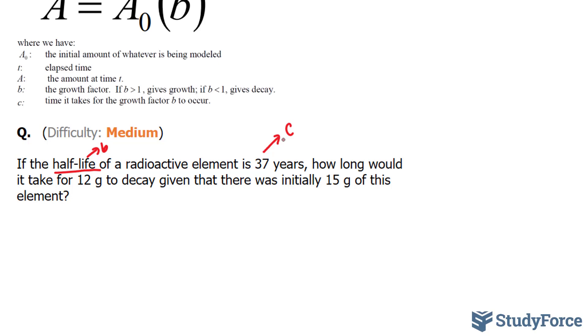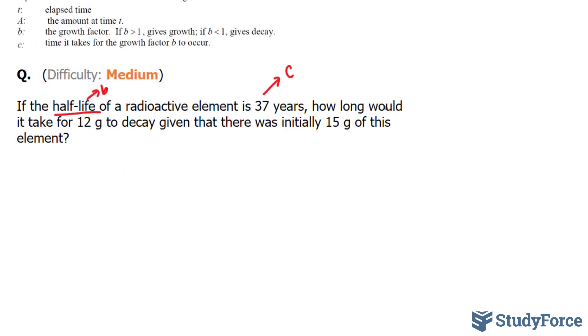So it takes 37 years for half of that matter to disappear. How long would it take for 12 grams to decay, given that there was initially 15 grams of this element? So initially, there was 15 grams. That's A0.